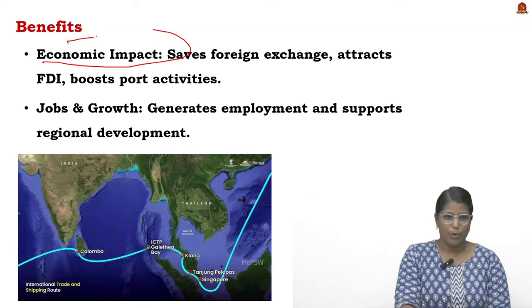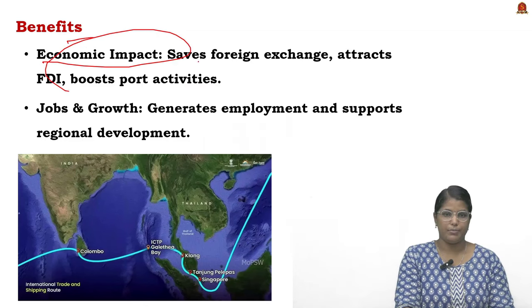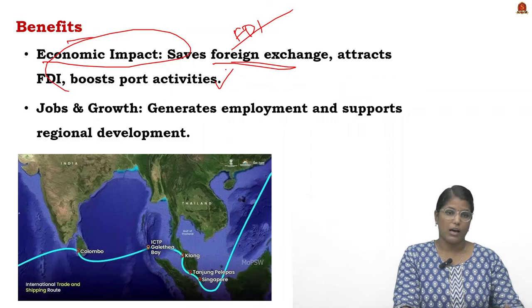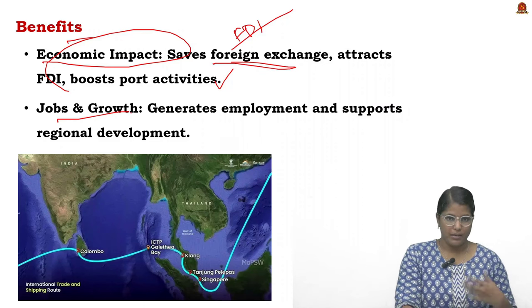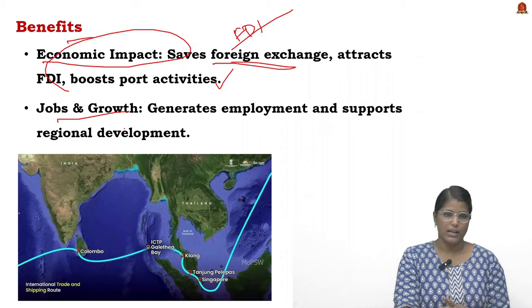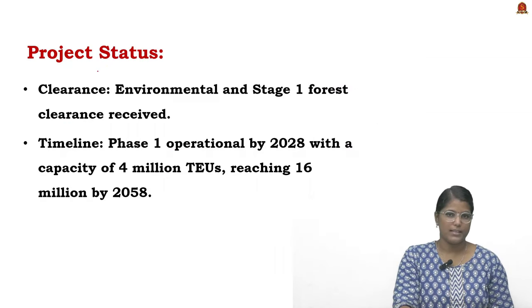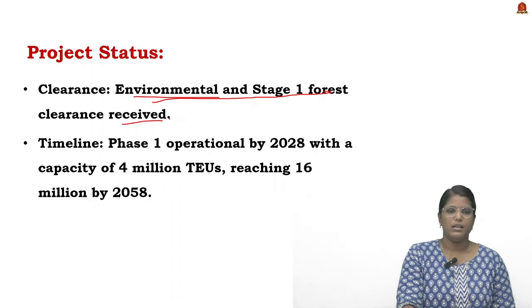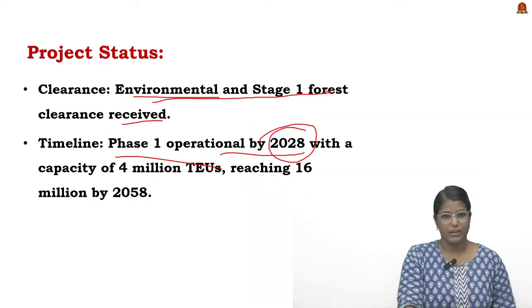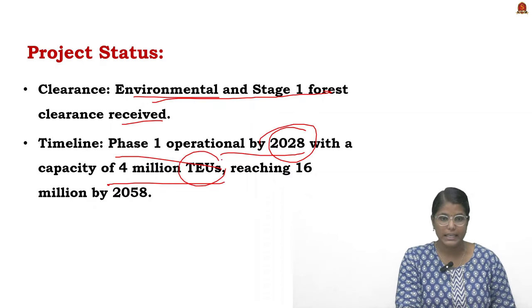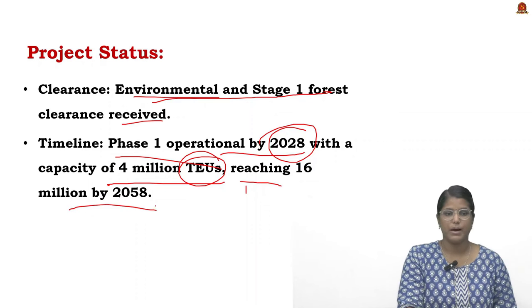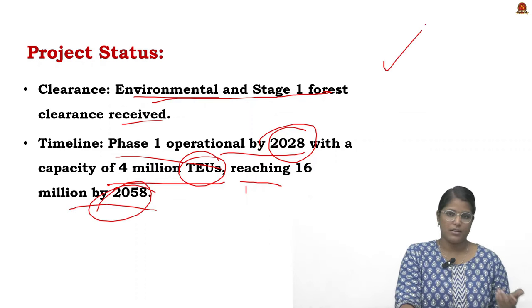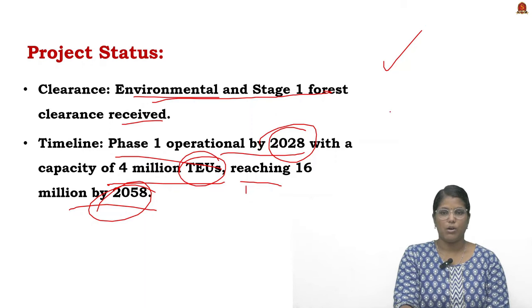The project provides economic benefits: it brings a lot of FDI and helps foreign exchange earnings as it boosts port activities. It also brings jobs and growth to the region, leading to regional development. Currently, environmental and Stage 1 forest clearance has been approved. Phase 1 will be operational by 2028 with a capacity of 4 million TEUs, reaching 16 million TEUs by 2058.